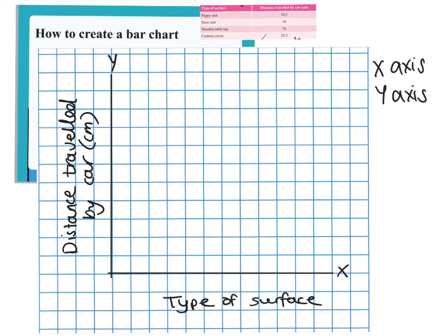The next thing I'm going to do is label my y axis with a scale. We need to make sure they're equal intervals so that the interval between each box is the same amount. I'm going to start at zero and label my intervals in intervals of 10, so each square will represent 10. So I've got 10, 20, 30, 40, 50, 60, 70, 80, 90, and I'll just go up to 100.